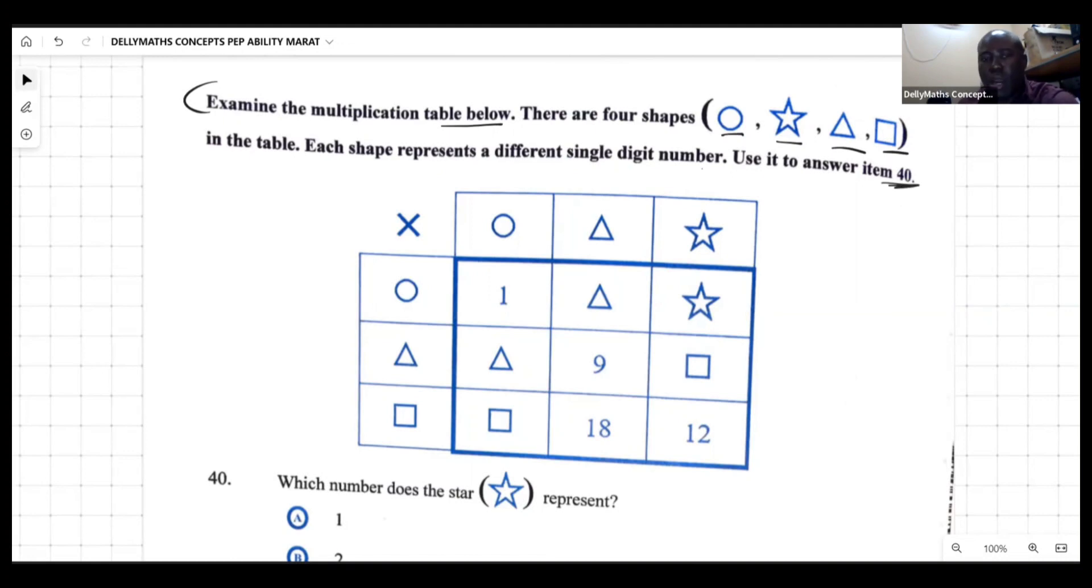Item 40 says which number does the star represent. Now if we get a question like this, what we want to do is firstly fill out this entire table. Make an effort to fill out the table, and after filling out the table, then definitely we're going to see what the star actually represents.